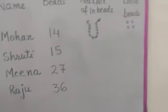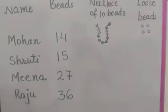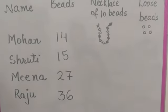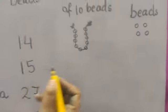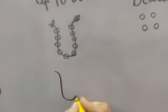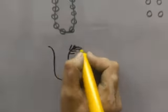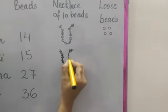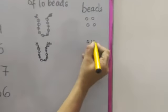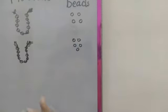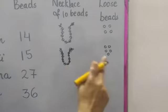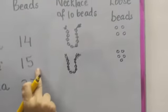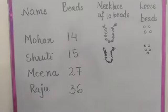Now Shruti wants 15 beads. You tell me, students — how will the shopkeeper give 15 beads? Yes! He will give one necklace of 10 beads and 5 loose beads. So 1 ten and 5 ones: 10 plus 5 equals 15.